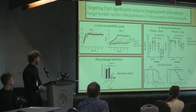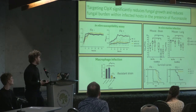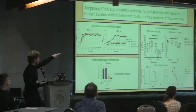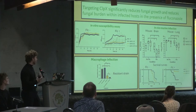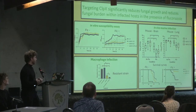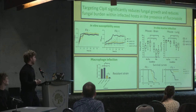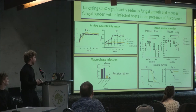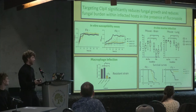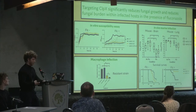We have a lead protein, ClpX. What we found so far is that once we target ClpX, it significantly reduces fungal growth in our first assays. We then moved to a host infection model - first macrophage, where we saw completely reduced growth after targeting ClpX. We also moved to a mouse model, looking at the brain and lung for fungal growth, and after targeting ClpX we saw significantly reduced growth. Additionally, mice tended to survive longer in the presence of fluconazole. Our next step is using an inhibitor and trying to optimize it to elaborate on its therapeutic potential.